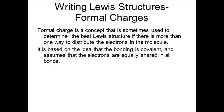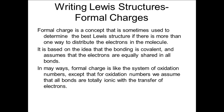In the formal charge system, we assume that the electrons are shared exactly equally between the atoms. In some ways, this is similar to the system of oxidation numbers, where we assume that the electrons are totally transferred and all bonds are ionic. In a sense, these two systems are opposite ends of a spectrum, where real bonding is somewhere in between. Neither system corresponds to the real world exactly, but both systems can give us insight into the real world.